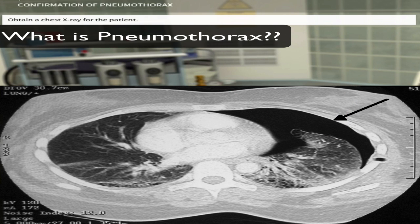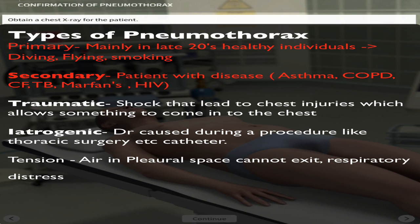The different types of pneumothorax — mainly you want to concentrate on primary and secondary. Secondary occurs in patients with some sort of underlying disease like asthma or COPD, while primary happens in young individuals and is associated with diving, flying, and smoking.